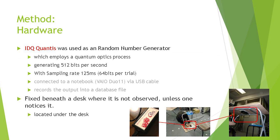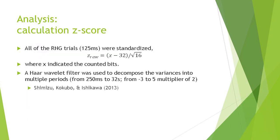Hardware: IDQ QONTIS was used as a random number generator which employs a quantum optics process, generating 512 bits per second with sampling rate 125 milliseconds. Connected to a node PC via USB cable, recorded the output into a database file. Fixed beneath a desk where it is not observed unless one noticed it, located under the desk. All of the RNG trials were standardized. So one of the RNG trials were standardized. I cannot read this equation. So where X indicated the counted bits.